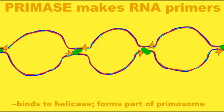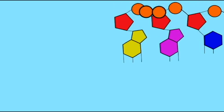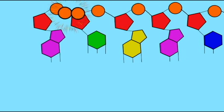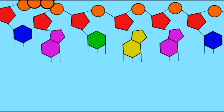So as helicase unzips the DNA, an RNA primer is made. The DNA polymerase can then move backwards 5' to 3' to get to where the DNA molecule unzipped. By that time, helicase has unzipped a little bit more, so another primer can form and another DNA fragment made.